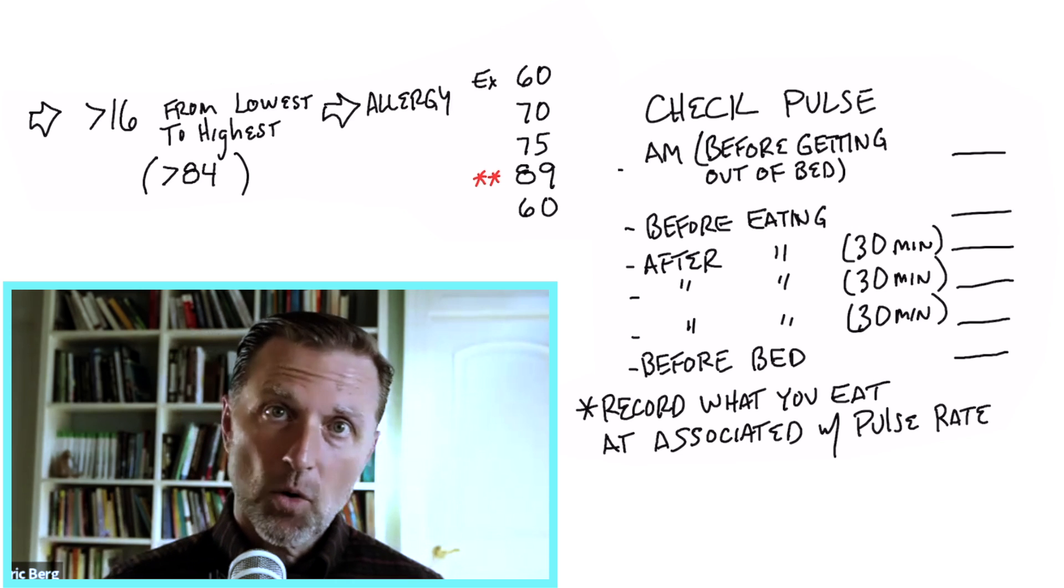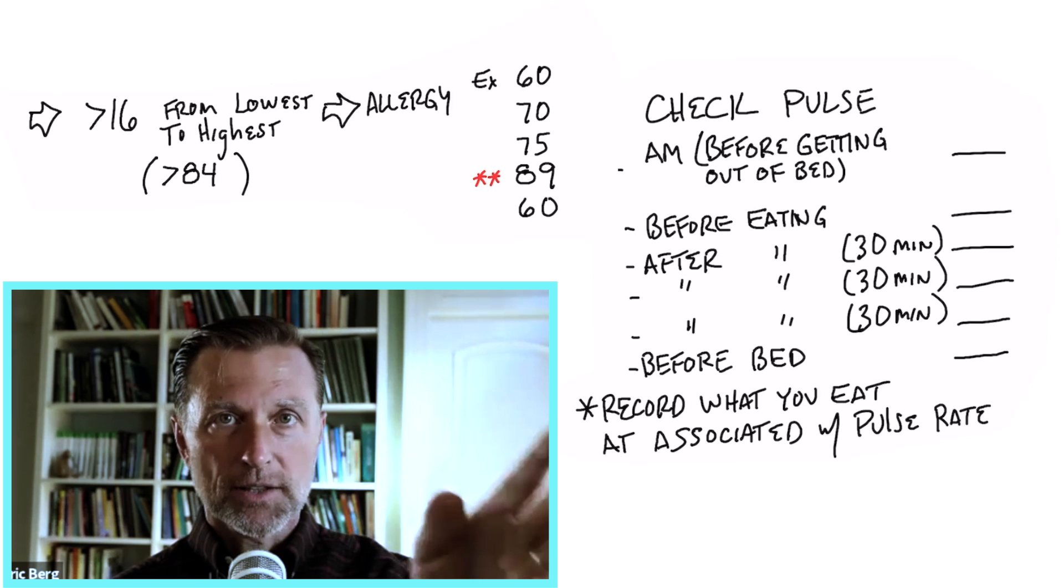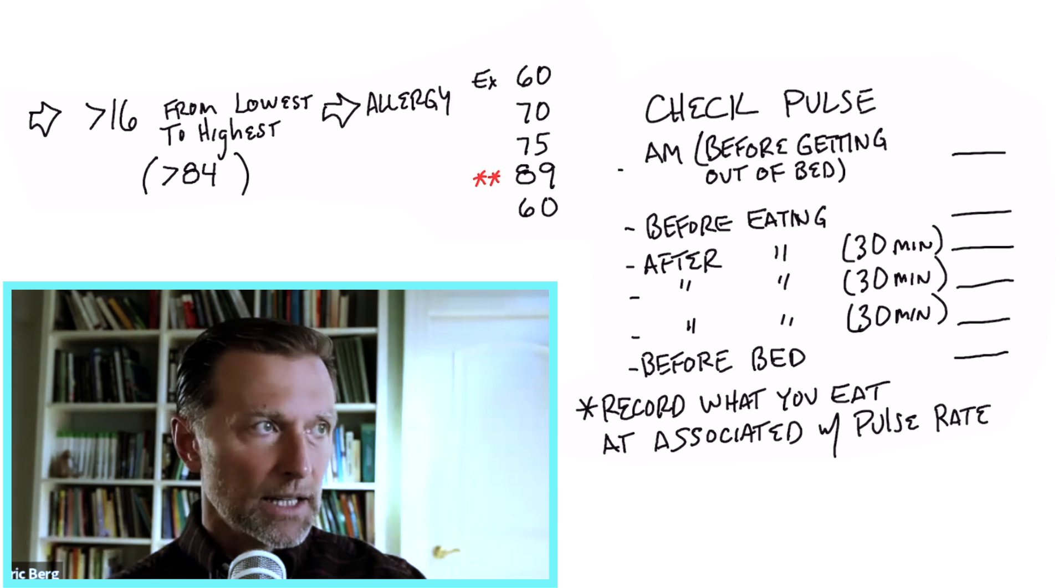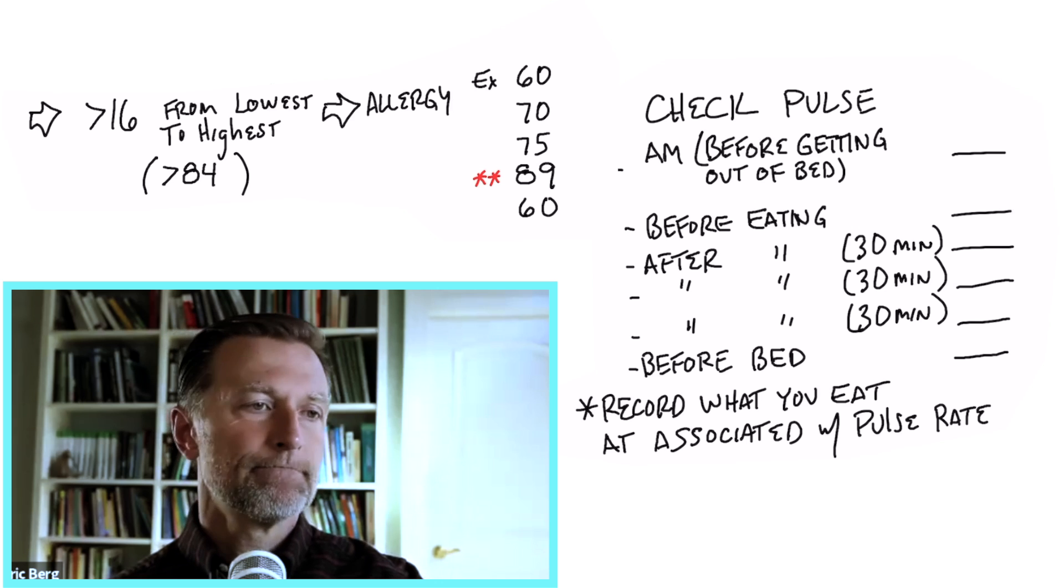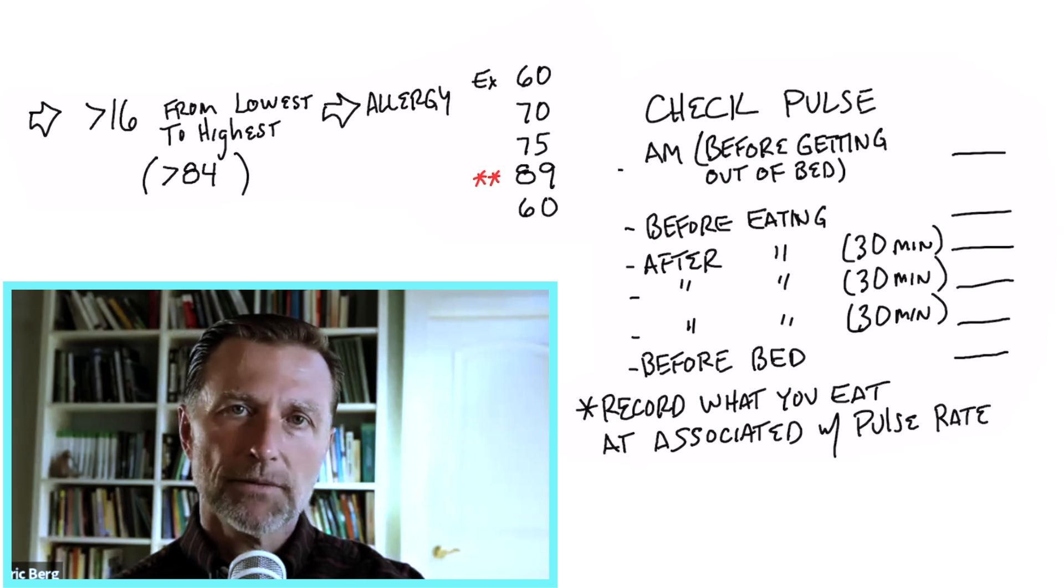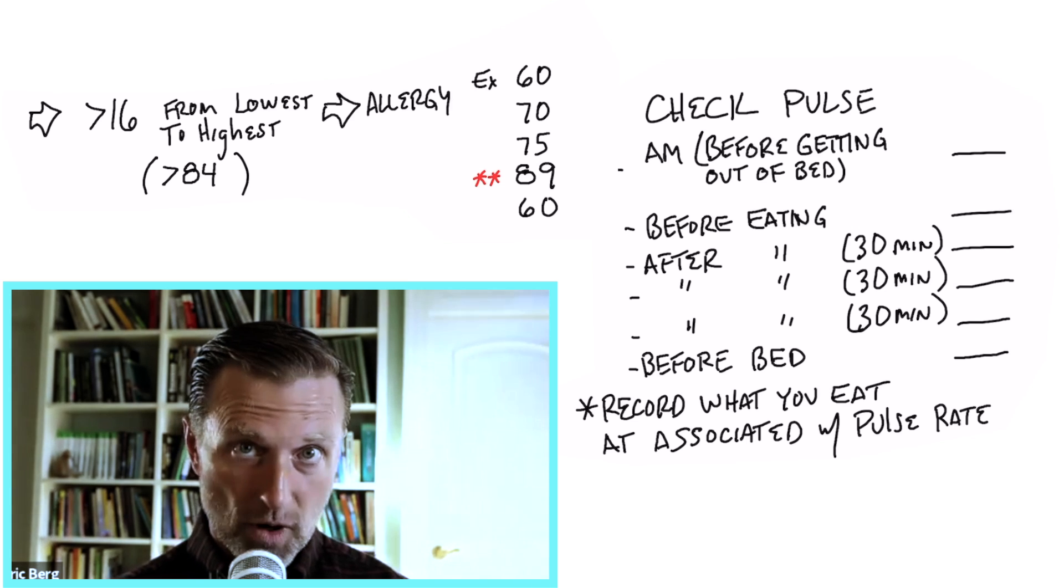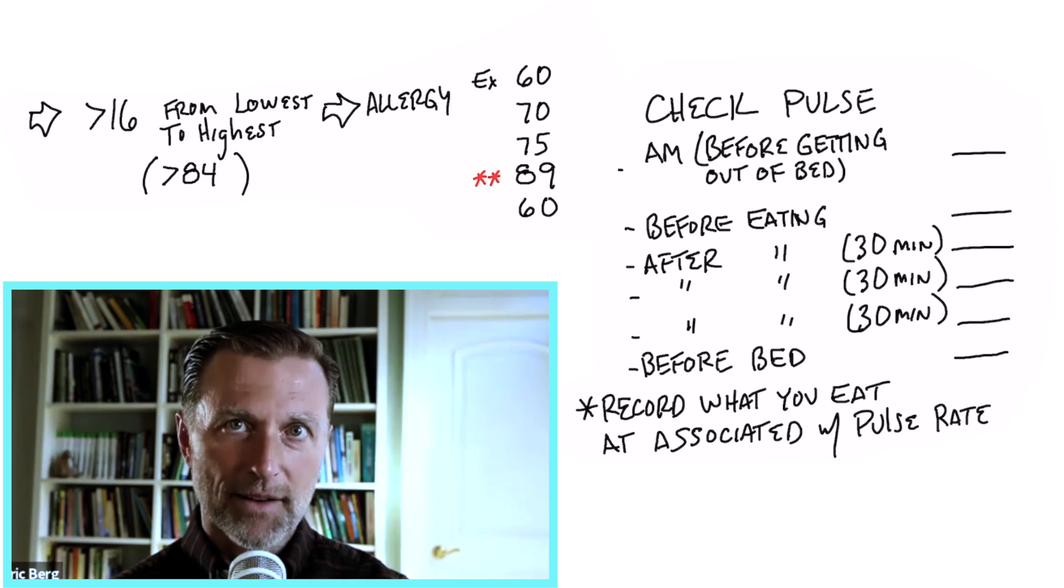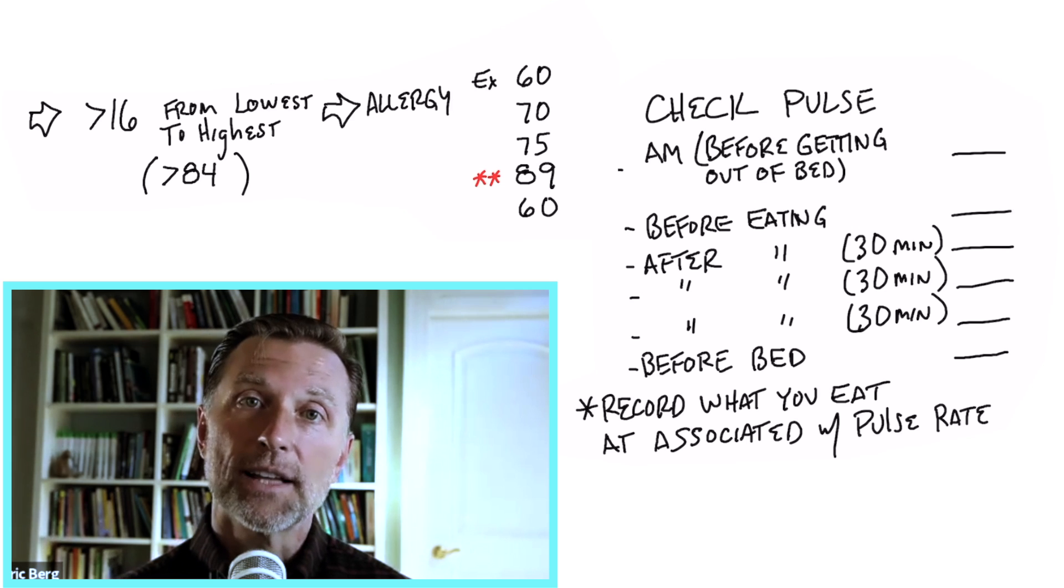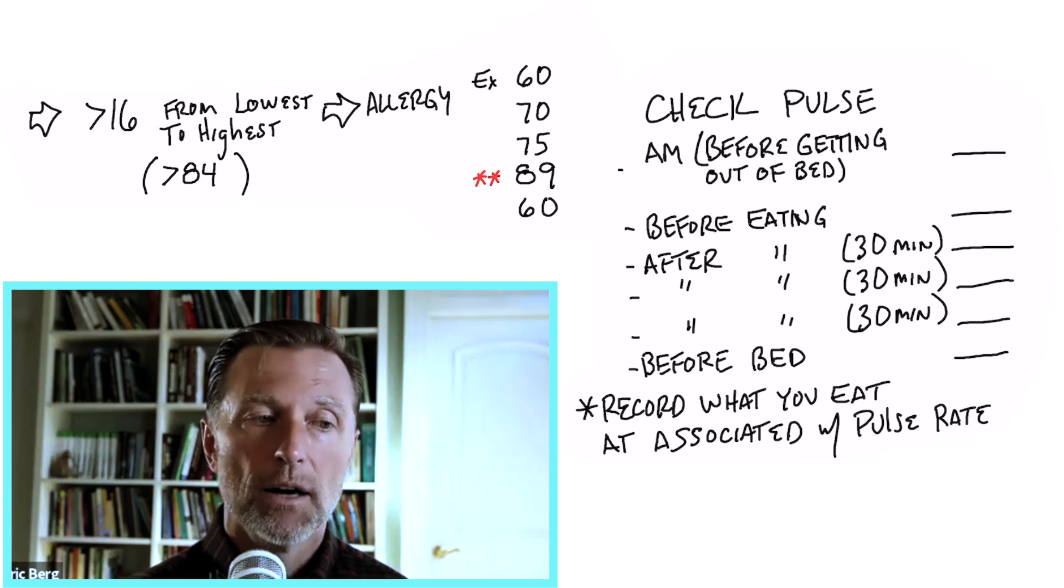So let's say, for example, you record all this information, and then you look at the pulse rate on this page. Like say the pulse rate on the right side and the left side, you have what you ate, and it goes like 60, 70, 75, 69, 72, 94. And then it comes down to maybe 73, right? Okay, 94. All right. That's a big clue. What did you just eat right before that?